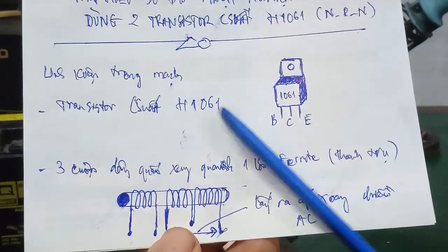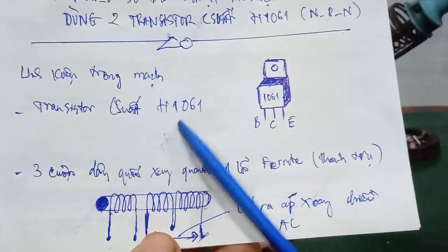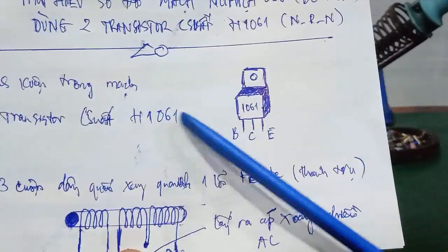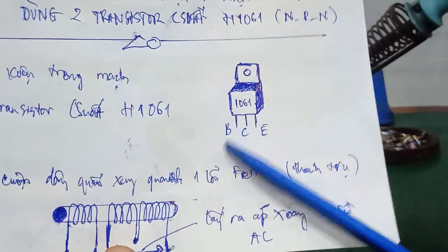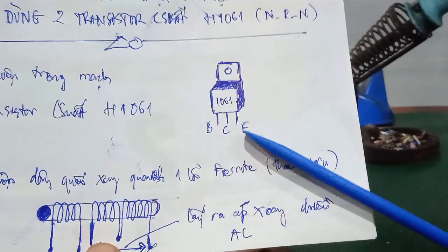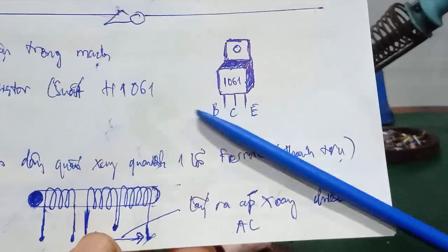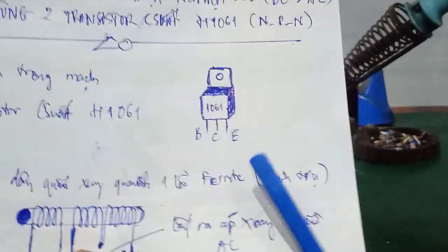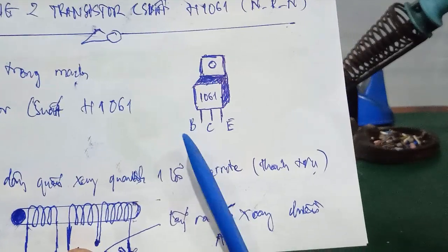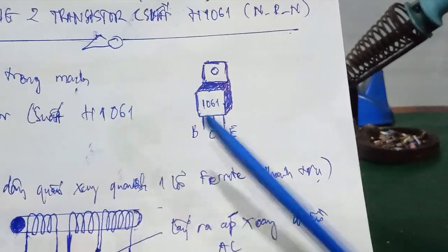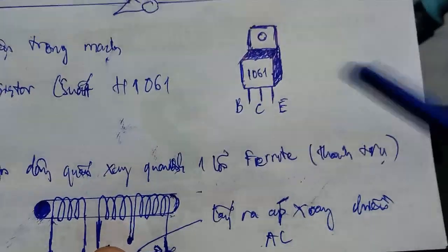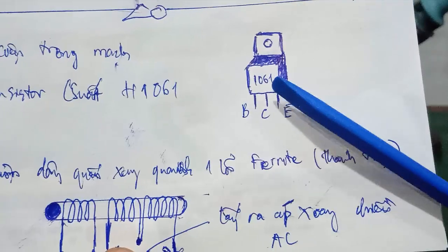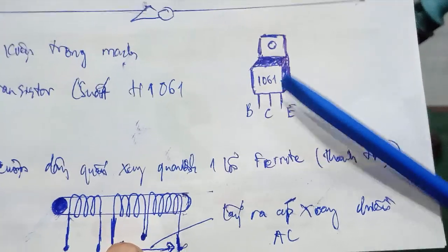Linh kiện chính trong mạch là những con transistor công suất H1061, loại ngược NPN. Các chân của nó là chân B, chân C, chân E. Cách kiểm tra cũng giống như transistor thông thường thôi. Đo thuận nghịch lại, coi nó có đúng cái chỉ số điện trở không. Tại vì 1 chiều lên, 1 chiều không lên, cách kiểm tra cũng giống như con BJT thông thường.